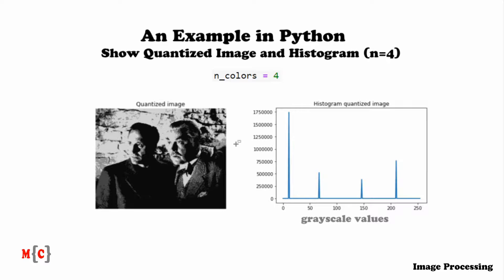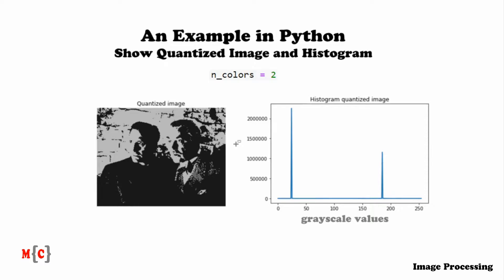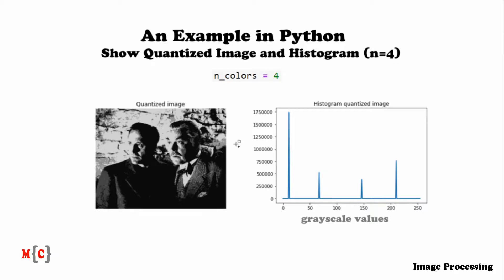So as we saw earlier, quantization is irreversible because it throws away quantitative information. And we also see this very well from these examples, because when comparing the two grayscale values case with the four ones, we see that there is much more detail in the one where we have four colors. And if you understand this, you basically grasp the essence of quantization.